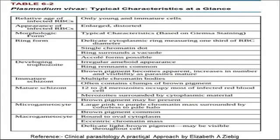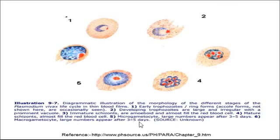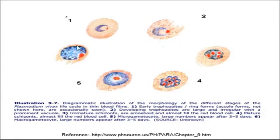This table is from 'Clinical Parasitology and Practical Approach' by Elizabeth A. Zeibeck, showing the various stages at a glance. There is also a diagram from the internet — the source is provided below — which is quite useful to understand the morphology of the various forms. You can see the early trophozoite or ring form, the developing trophozoite, then the immature and mature schizont which almost fills the RBC. It also shows the microgametocyte with a central chromatin dot and halo, and the macrogametocyte with an eccentric chromatin dot.